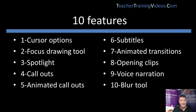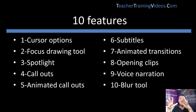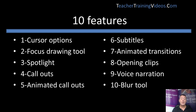I'll quickly go through the ten features so you understand what you're going to get. I'm going to show you cursor options — you can change the color, make them darker, or more transparent. I'll show you the focus tool, the drawing tool to highlight parts of the screen, and a spotlight that darkens the screen and focuses on one area. We can also have call outs with written text pointing at things, and animated call outs that come across the screen and disappear.